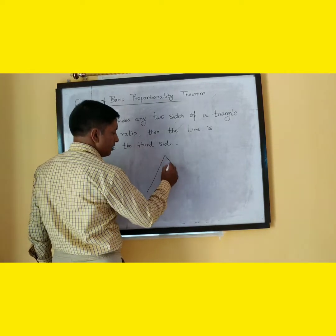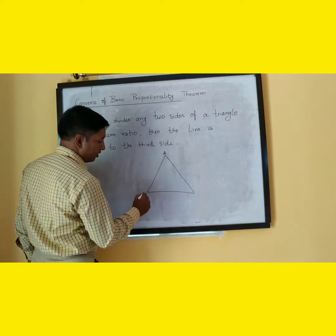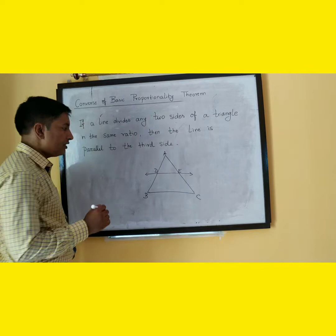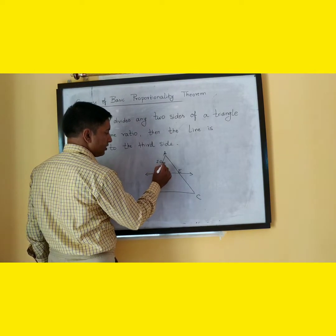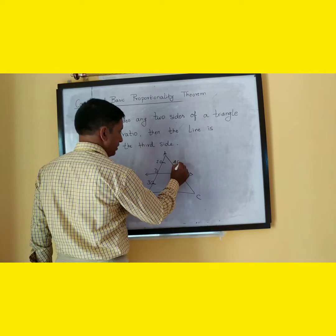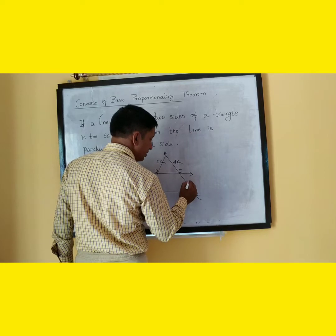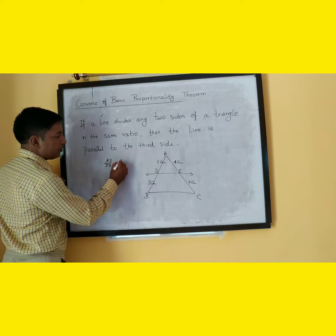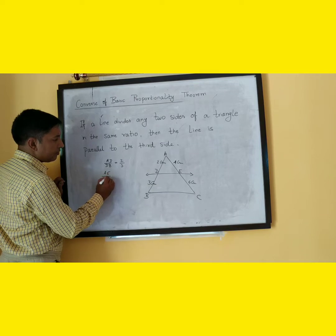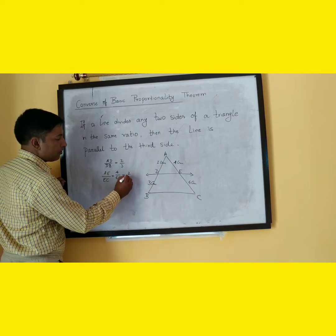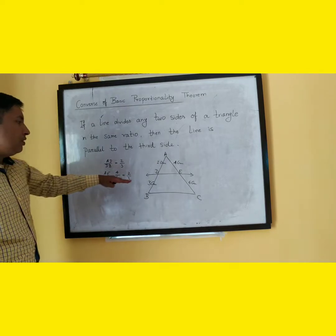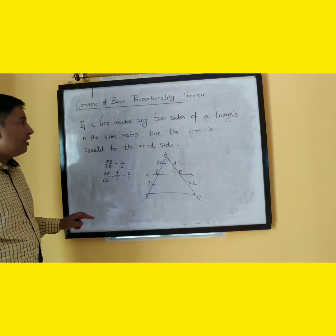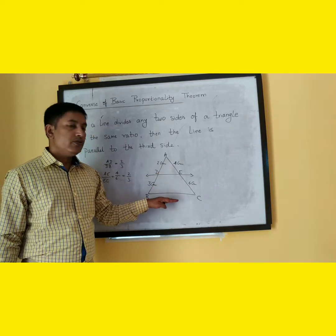Suppose we have a triangle ABC such that a line DE divides AB and AC. AD is 2 cm, DB is 3 cm, AE is 4 cm, and EC is 6 cm. Now AD divided by DB is equal to 2 by 3, and AE divided by EC is equal to 4 by 6, which is also equal to 2 by 3. Since DE divides AB and AC in the ratio 2:3, according to the converse of BPT, DE is parallel to BC.